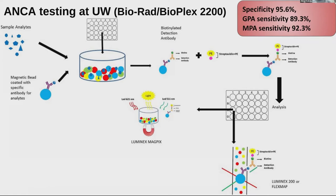Bioplex has a specificity of 95%, with sensitivity of 89% for GPA and 92% for MPA.